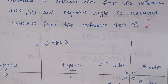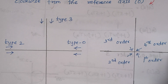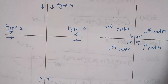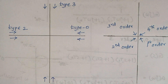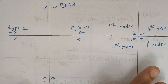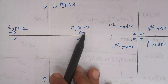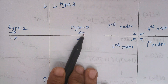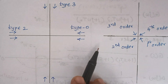This is a general diagram which shows how our polar plot will look based upon the type number and the order of the system. This is the basic foundation of a polar plot. If you know these things thoroughly, it will be very easy to draw the polar plot. Depending upon the type and order of the problem, we can determine how the polar plot will look.